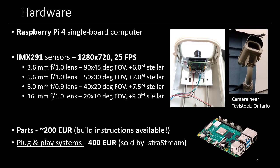If you live in a city with more light pollution, we usually use 8 millimeter lenses. And if you want to compute very precise trajectories, we recommend 16 millimeter lenses. We have a couple of those systems deployed as well.